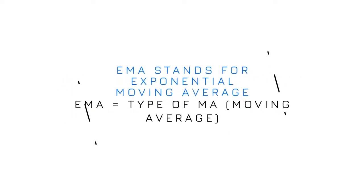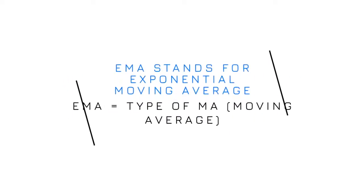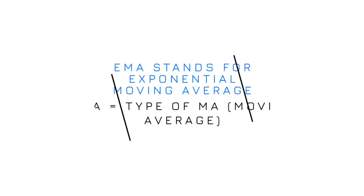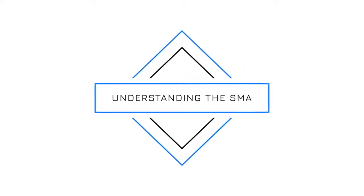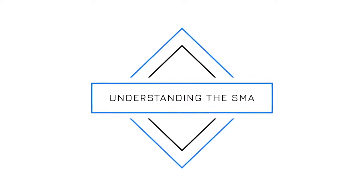EMA stands for Exponential Moving Average and is a type of moving average. In order to first understand the EMA used in the EMA Cross Indicator, we must first understand SMAs.